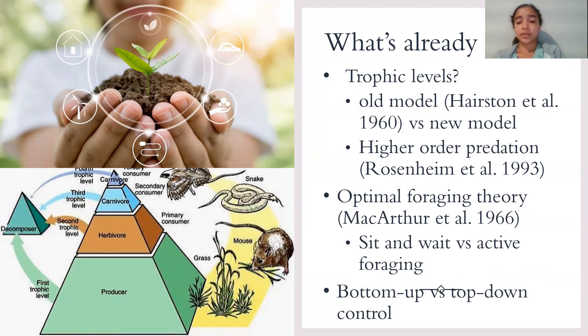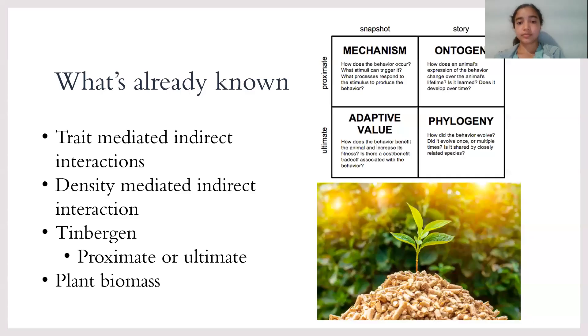There's bottom up versus top down control. Bottom up control is when the producers have an influence on the trophic levels above them, while top down control is when the absence or presence of the predator affects the trophic levels below it.